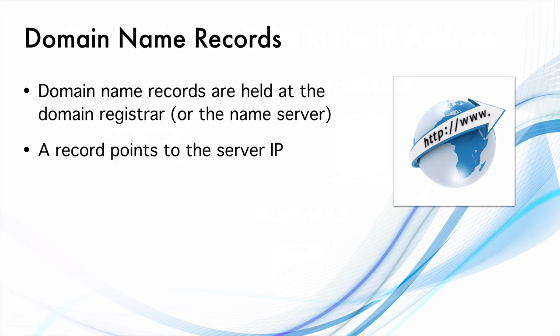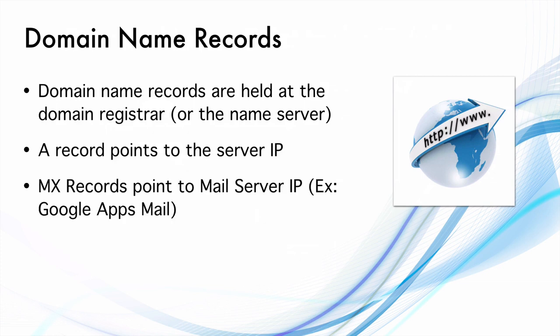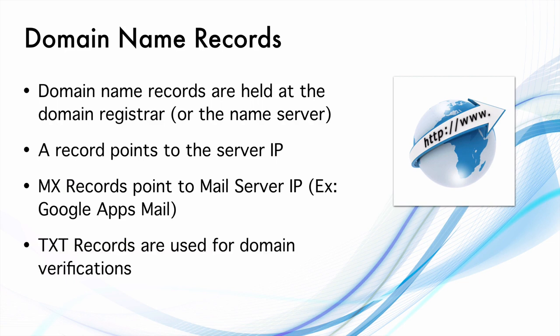There is something called an A record — the A record will point to the server IP address. The MX record will point to the mail server IP address. For example, if you have a Google Apps account, there are separate MX records for Google Apps. And then you have something called TXT records, which are used for domain verifications.